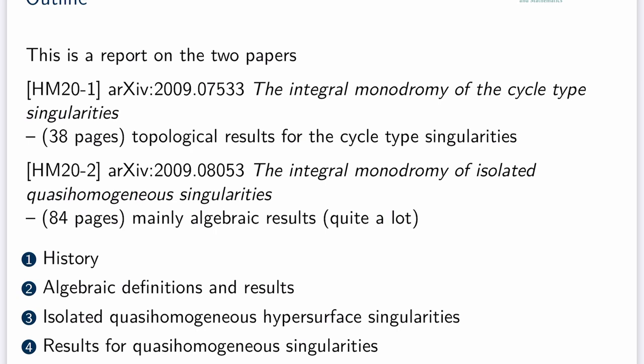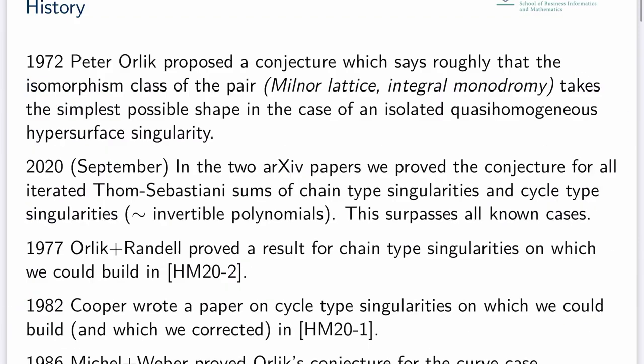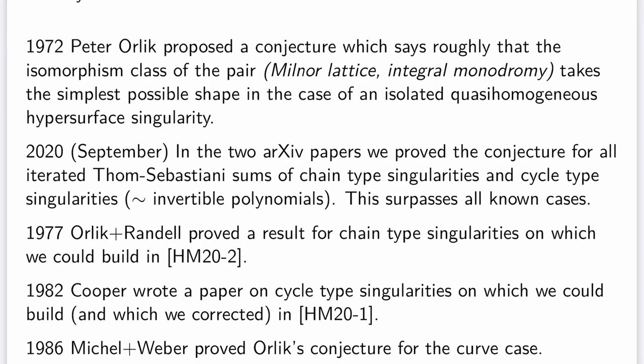The next slide covers the history of the subject. Afterwards I will present eight slides with algebraic definitions and results from the longer paper, then recall in four slides classical facts on isolated quasi-homogeneous hypersurface singularities, and finally come to the application of the algebraic results. Peter Orlik in 1972 proposed a conjecture which says roughly that the integral monodromy on the Milnor lattice of an isolated quasi-homogeneous hypersurface singularity takes the simplest possible shape.